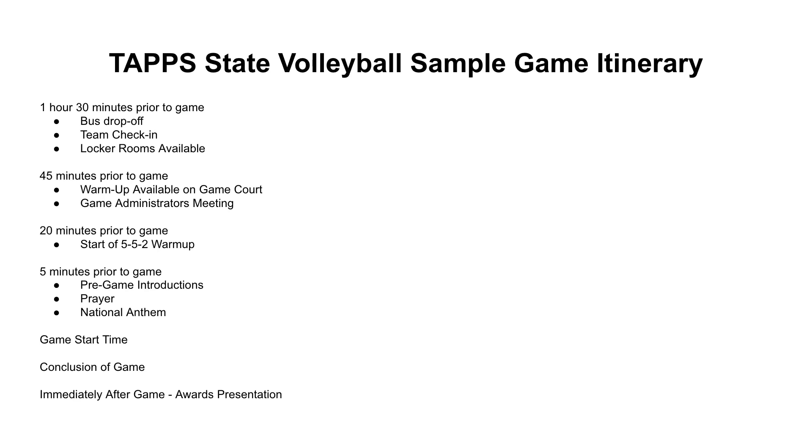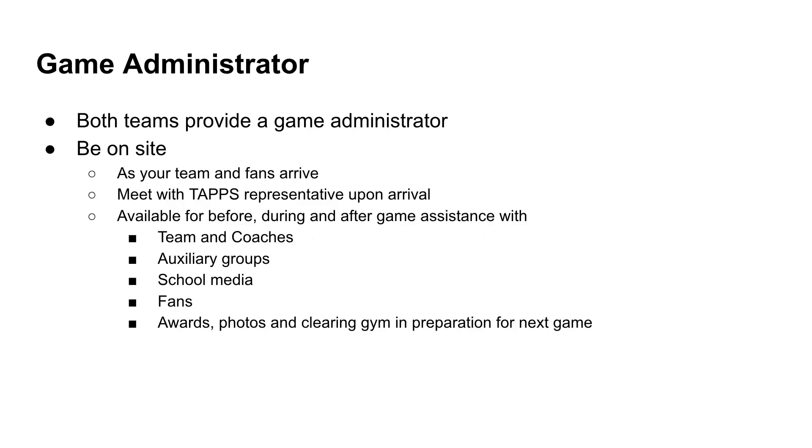Immediately after the game, both teams will line up and we'll do our awards presentation at that time. Also, keep in mind we are still on I-35 — Waco has done a lot of good redesigning the freeway, but it's still I-35, so allow yourselves plenty of time for travel. Once we finish the game and do the final handshake, teams will report back to the free throw line extended so we can get our awards presentation underway.